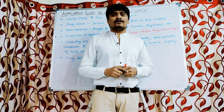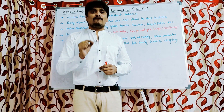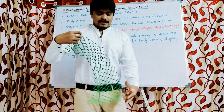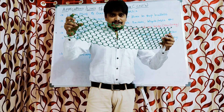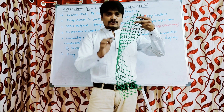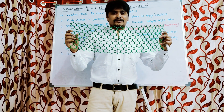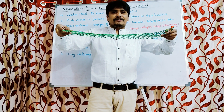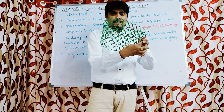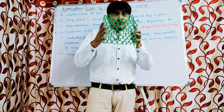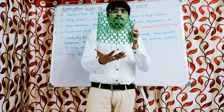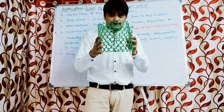Before going into the applications, I will recap the structure of carbon nanotubes. A carbon nanotube comprises a graphene sheet, which is a flat monolayer made up of hexagons. In order to get the structure of a carbon nanotube, we roll this graphene sheet and place a semi-fullerene structure at the top and bottom of the rolled graphene sheet.